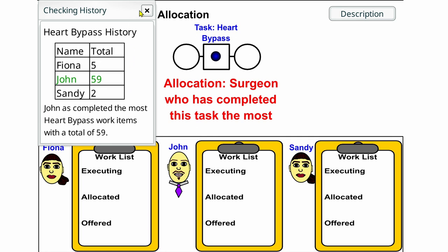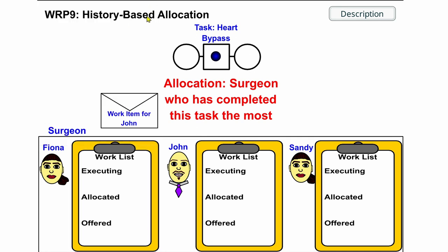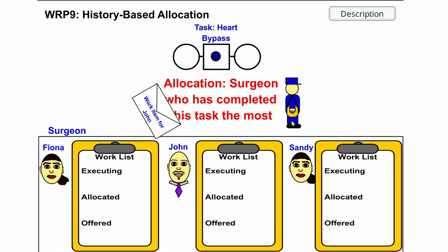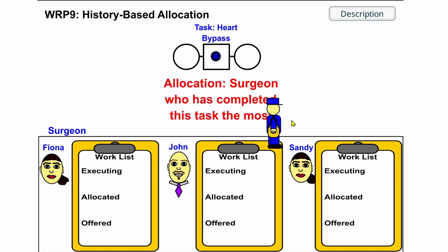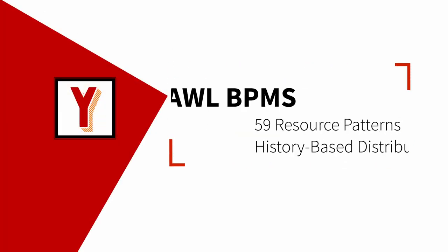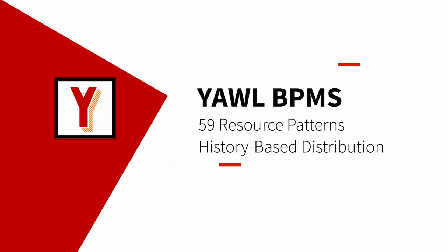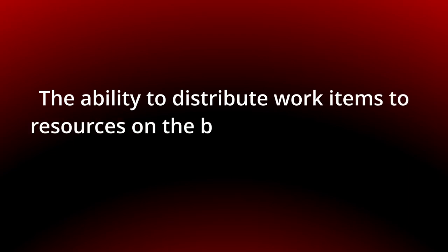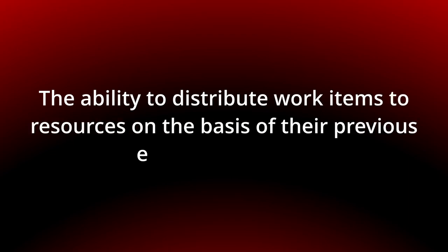Allocate the finalized heart bypass task to the surgeon who has successfully completed the most of these tasks. Hi, my name is Andreas Hense and this video is part of a series on resource patterns in YAWL. Today, we talk about history-based distribution — the ability to distribute work items to resources on the basis of their previous execution history.